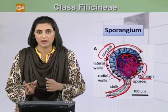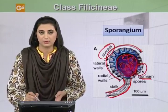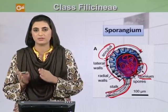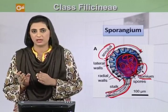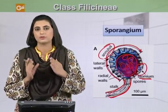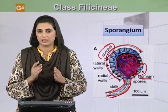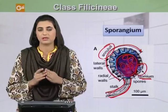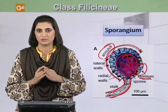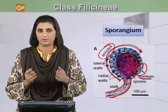When dry conditions occur, the annulus contracts and breaks. Due to the breakage of the stomium, spores are released. When the spores encounter favorable conditions, they will convert to the gametophyte generation.